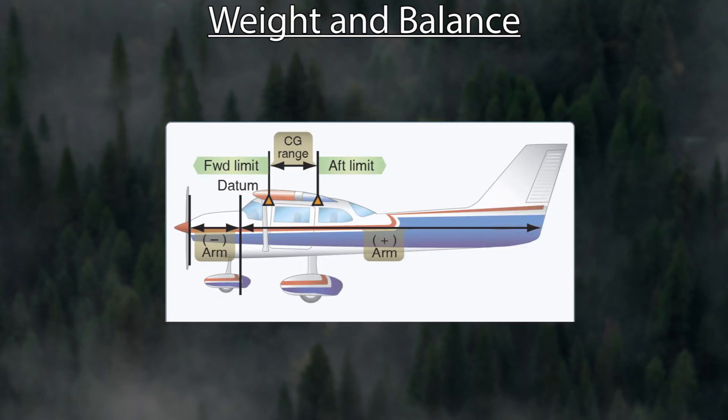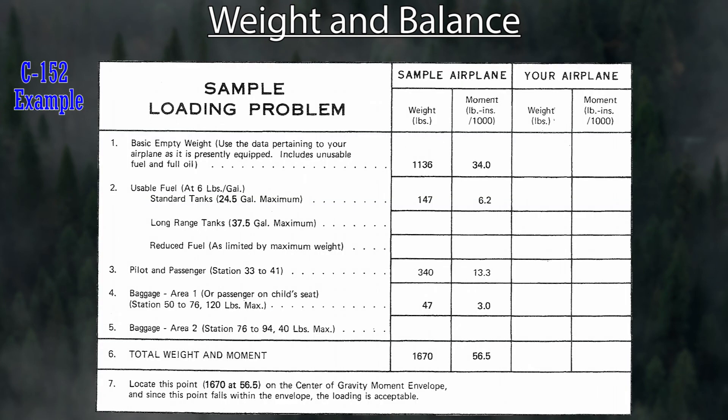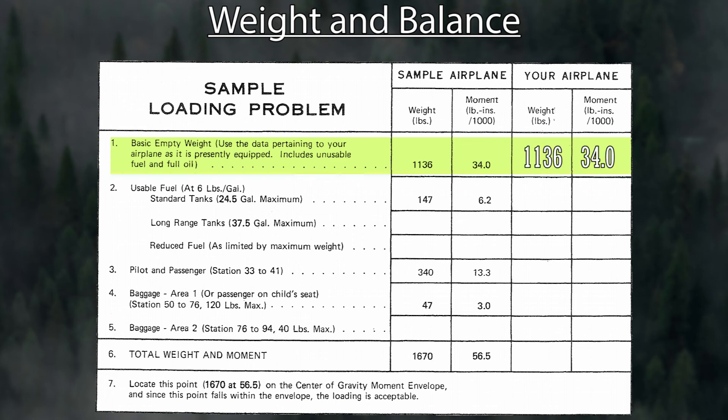Let's look at an actual airplane problem. Most POHs will have a sample loading problem and space where you can write your own. Here's how you compute a weight and balance. Number one is the basic empty weight — this is the actual weight and moment for that specific tail number. We'll use the sample problem numbers: weight is 1,136 with a moment of 34.